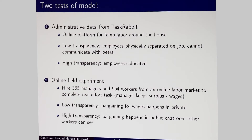We have two tests of the model in the paper. One uses administrative data from an online labor market for chores, where transparency differs by job setting. Some jobs have workers physically separated who can't talk to each other; others have workers co-located who can discuss wages. We verify the results in this setting. There's also a field experiment where we hire 365 managers and roughly 1,000 workers from an online labor market to complete a transcription task. They negotiate for wages. In the low transparency setting, a manager assigned to three workers negotiates separately in different chat rooms; in the high transparency setting, all bargaining happens at once so everyone can see what others demand.